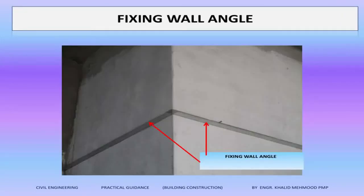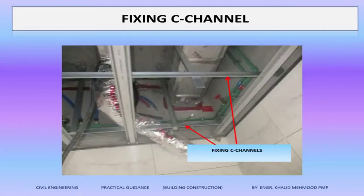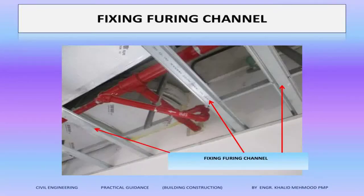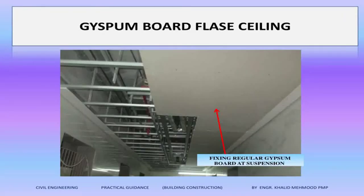This is an access door. Step number one: we are fixing the wall angles — 25 by 25 mm — on the wall. Step number two: we are fixing hangers on the soffit of the slab, on the ceiling, with Hilti nails. Step number three: we are fixing the C-channels — the C-channels are fixed with the wall angles and with the hangers. Step number four: we are fixing the furring channels; furring channels are fixed on the C-channels and the wall angles. Here you can see a complete suspension system is done.